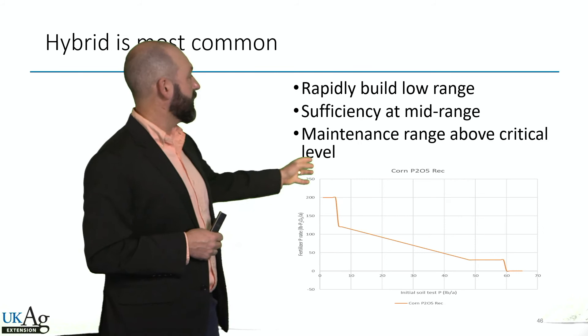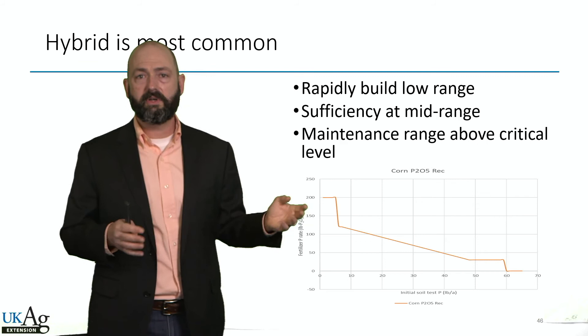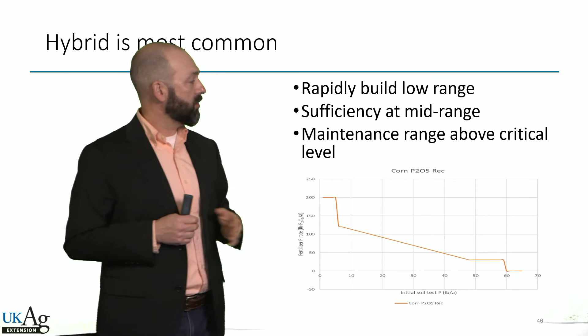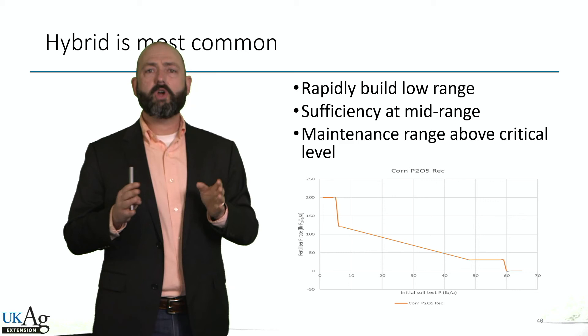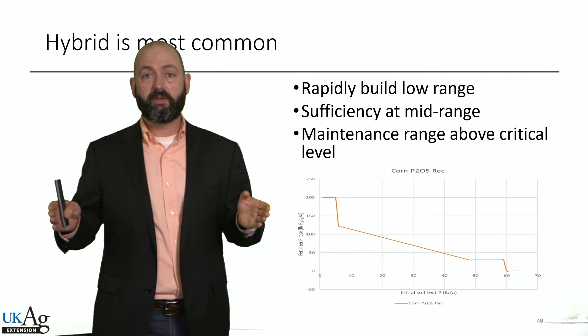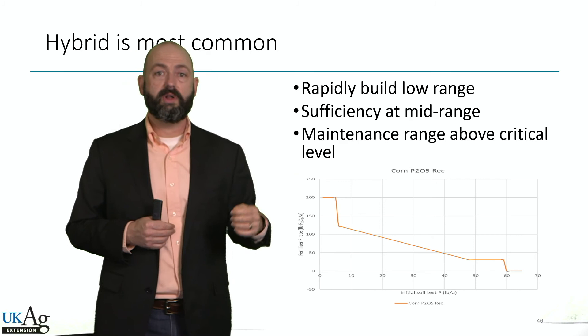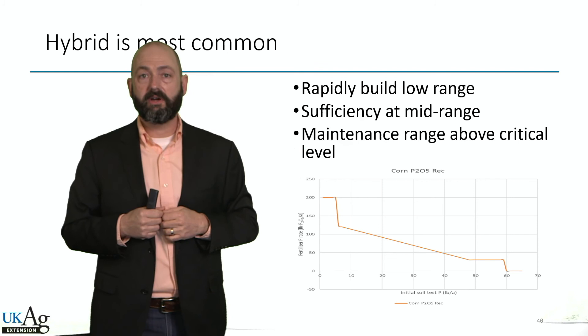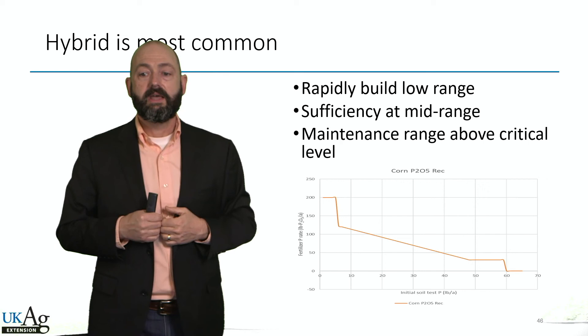For example, at the University of Kentucky we think the critical level is around 50 pounds per acre of phosphorus, or 25 to 27 parts per million Mehlich-3 phosphorus. Above that we don't see yield response, but we still make a small recommendation of about 30 pounds of P2O5 per acre to offset risk from field variability. Even though a field tests at 50 pounds per acre, it probably has portions that are actually down at 40 or 30, so we add a little to ensure we don't lose yield in those lower-testing pockets within the field.